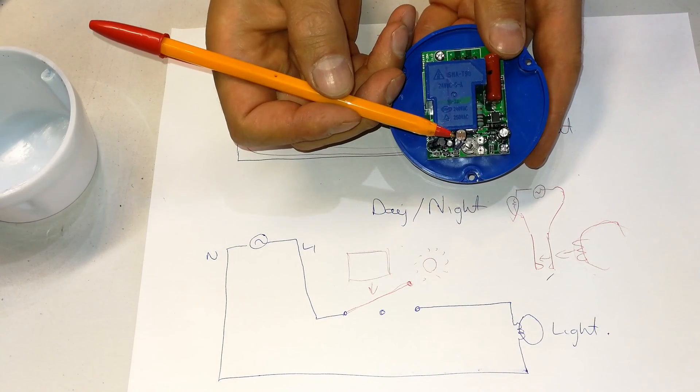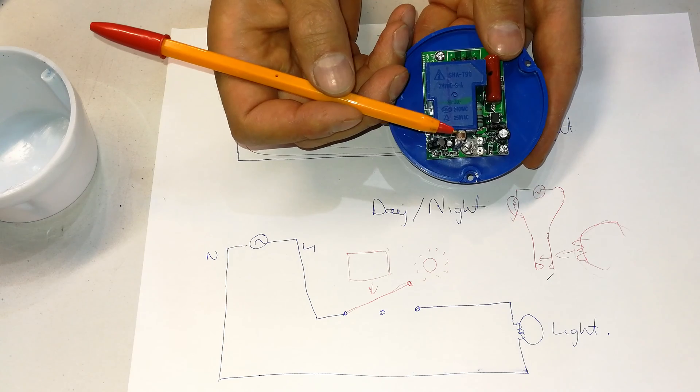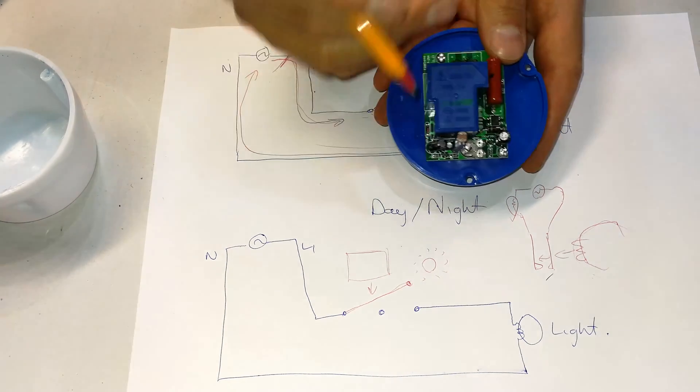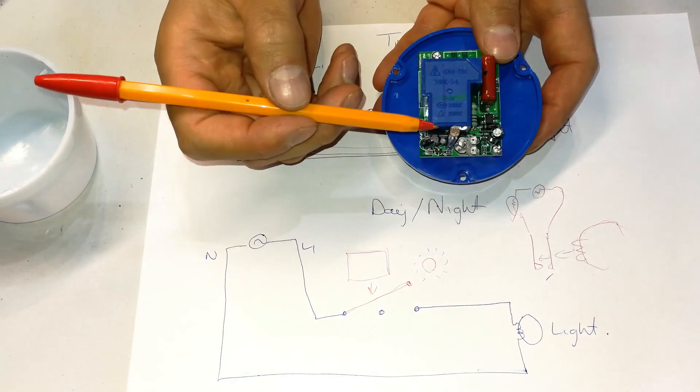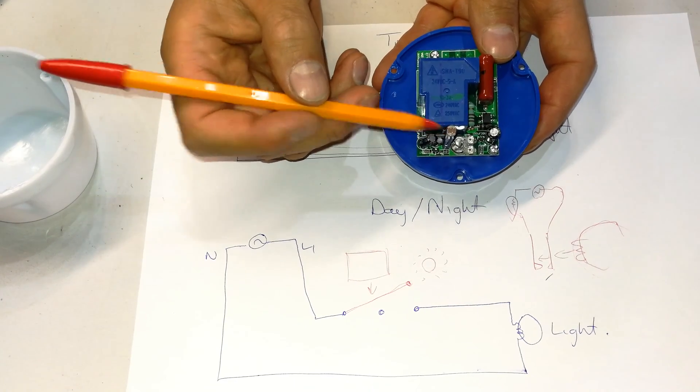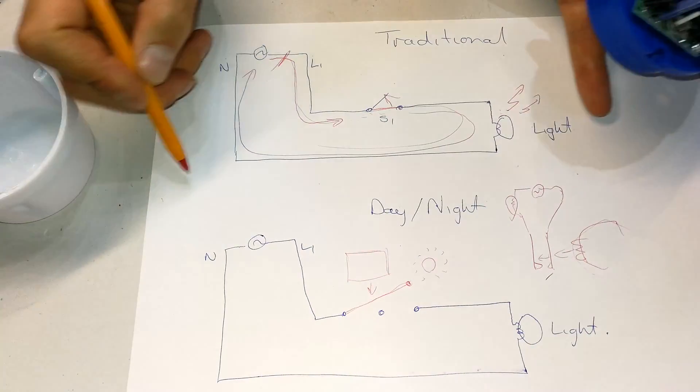It is the sensitivity of this LDR—this is a light dependent resistor. Now not all day-night switches use this technology. What this means is that this resistor, if you look at it, it looks like this.